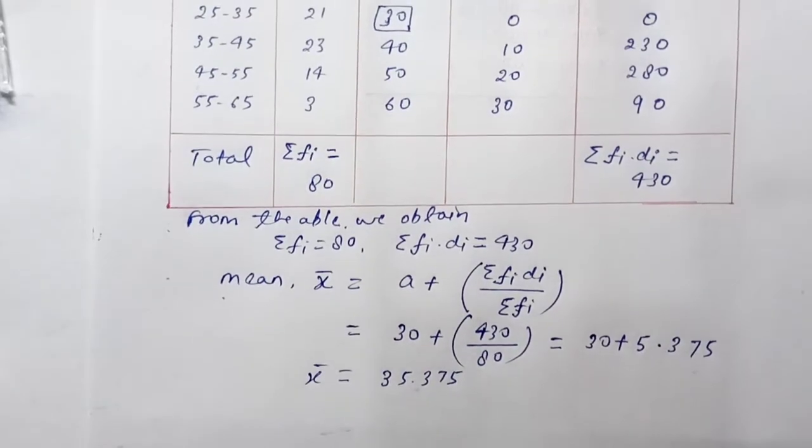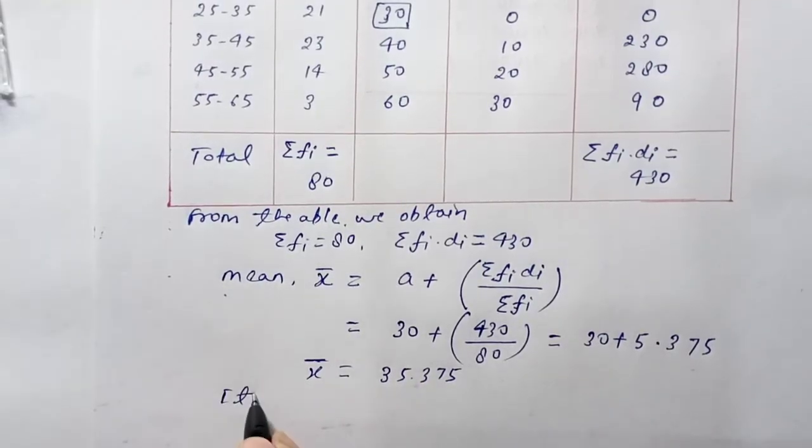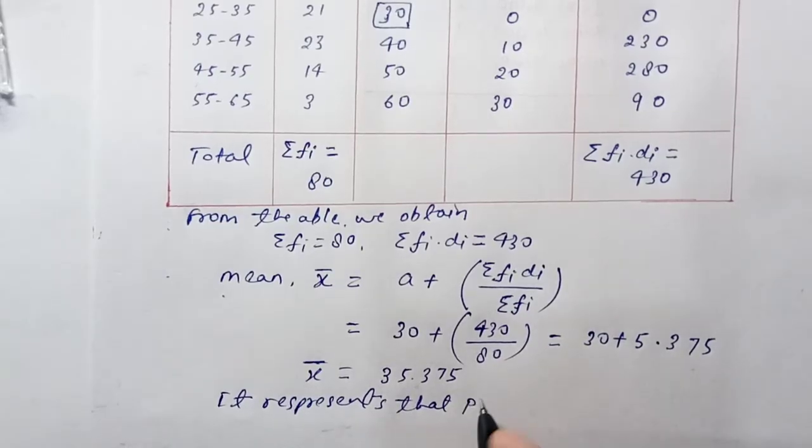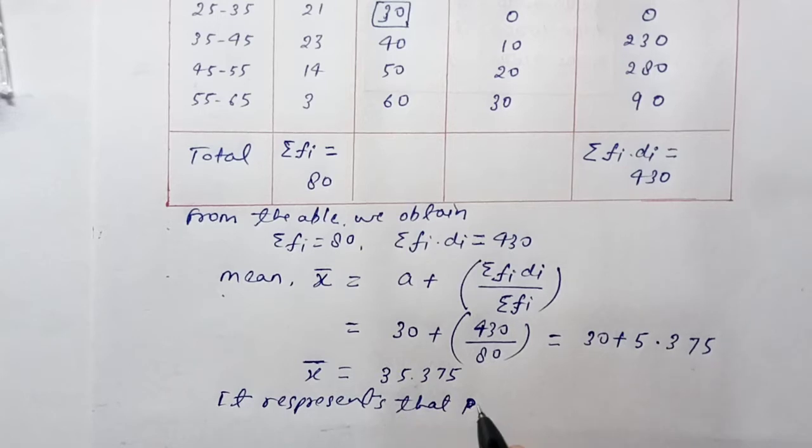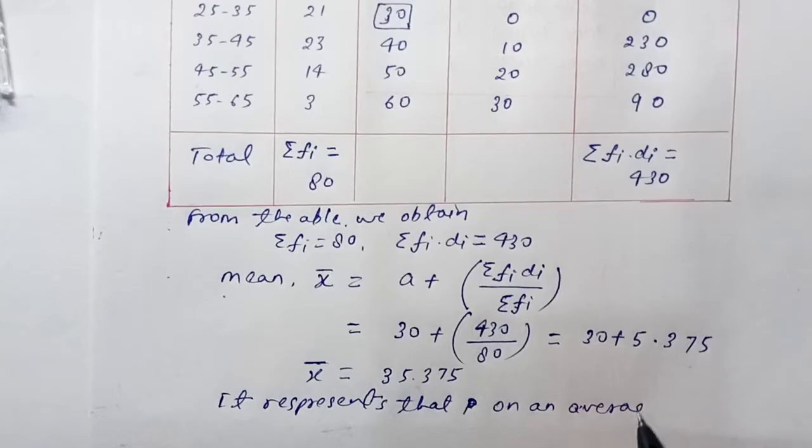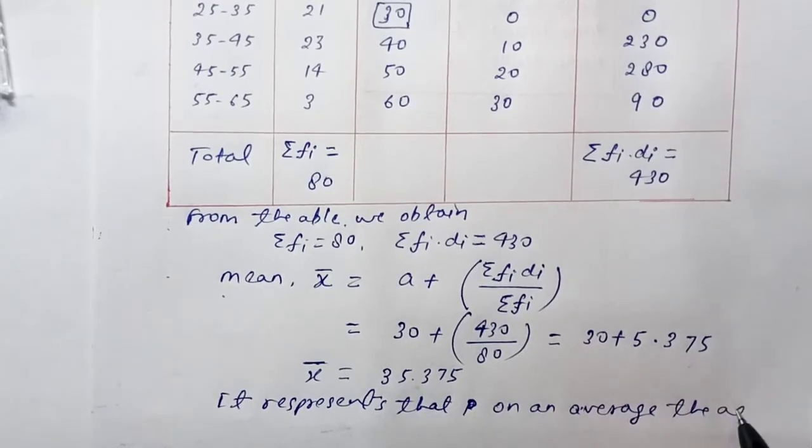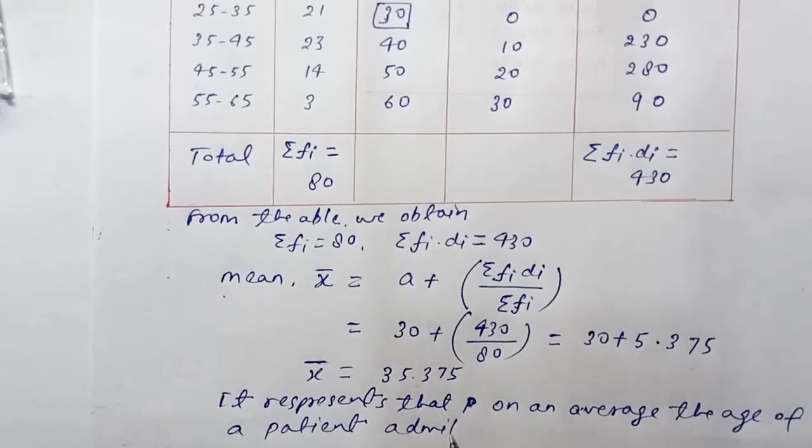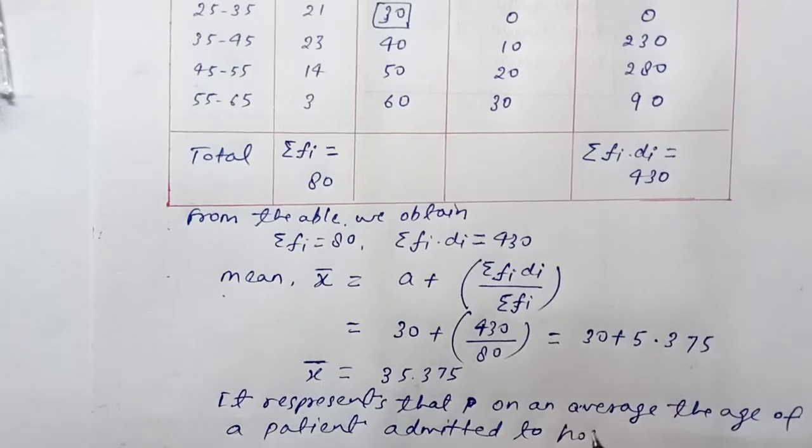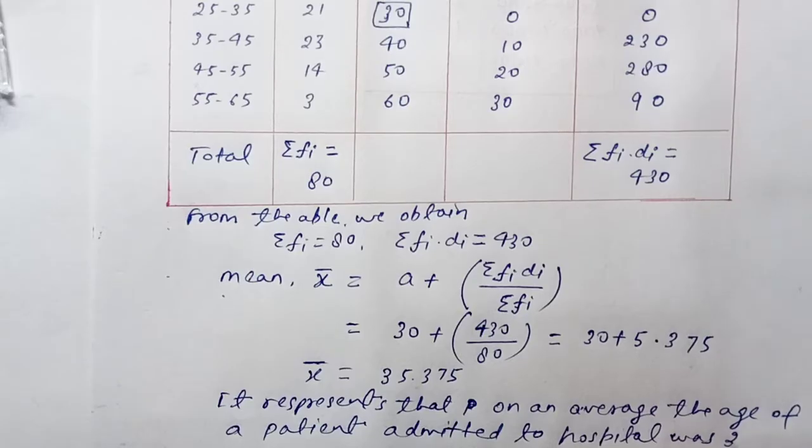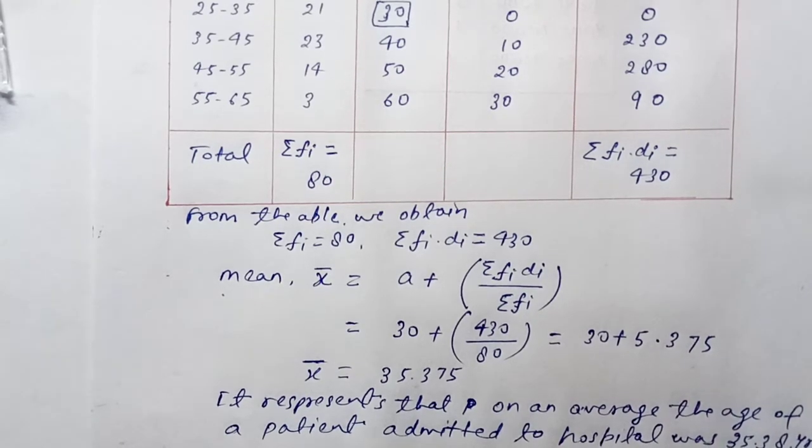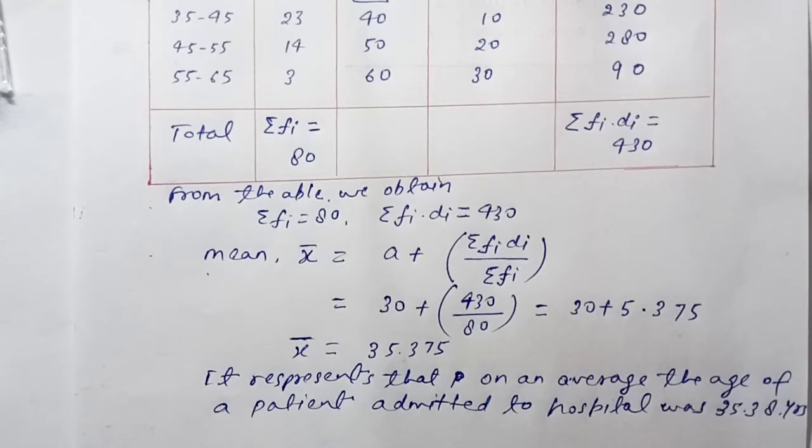The mean is 35.375 years. It represents the average age of patients admitted to the hospital, which was approximately 35.38 years.